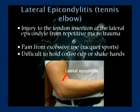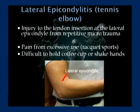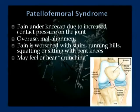Lateral epicondylitis, or tennis elbow: on the outside portion of the elbow there's a small bump called the lateral epicondyle where tendons insert. Lateral epicondylitis is injury to the tendon insertion at that area from repetitive microtrauma. It's very commonly seen with excessive use in racquet sports like racquetball or tennis. Many patients find that simple daily activities — such as holding a cup of coffee or shaking hands — can cause pain in this area.